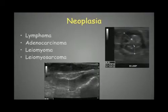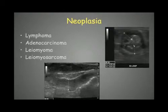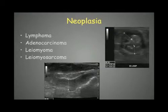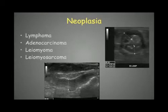Neoplasia of the GI tract can be visible with ultrasound. The most common types are lymphoma, adenocarcinoma, leiomyoma, or leiomyosarcoma. It is often difficult to determine the exact histologic type by ultrasound alone — cytology or histology is needed for a definitive diagnosis. These neoplasias have a typical ultrasonographic appearance with wall thickening — here 8 to 9 mm in this cat — and are hypoechoic with loss of layering.